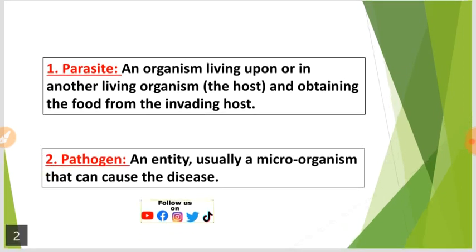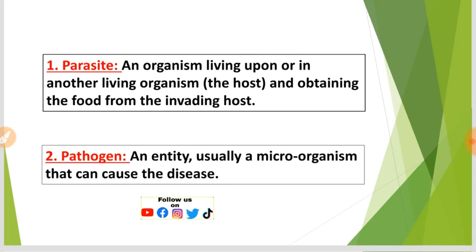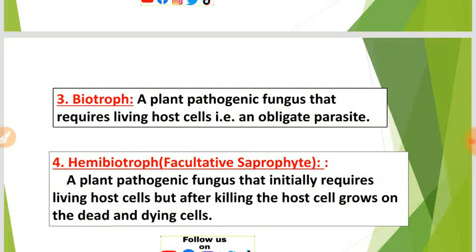Number one: Parasite. A parasite is an organism living upon or in another living organism and obtaining food from the invading host. Number two: Pathogen. A pathogen is an entity, usually a microorganism, that can cause disease.